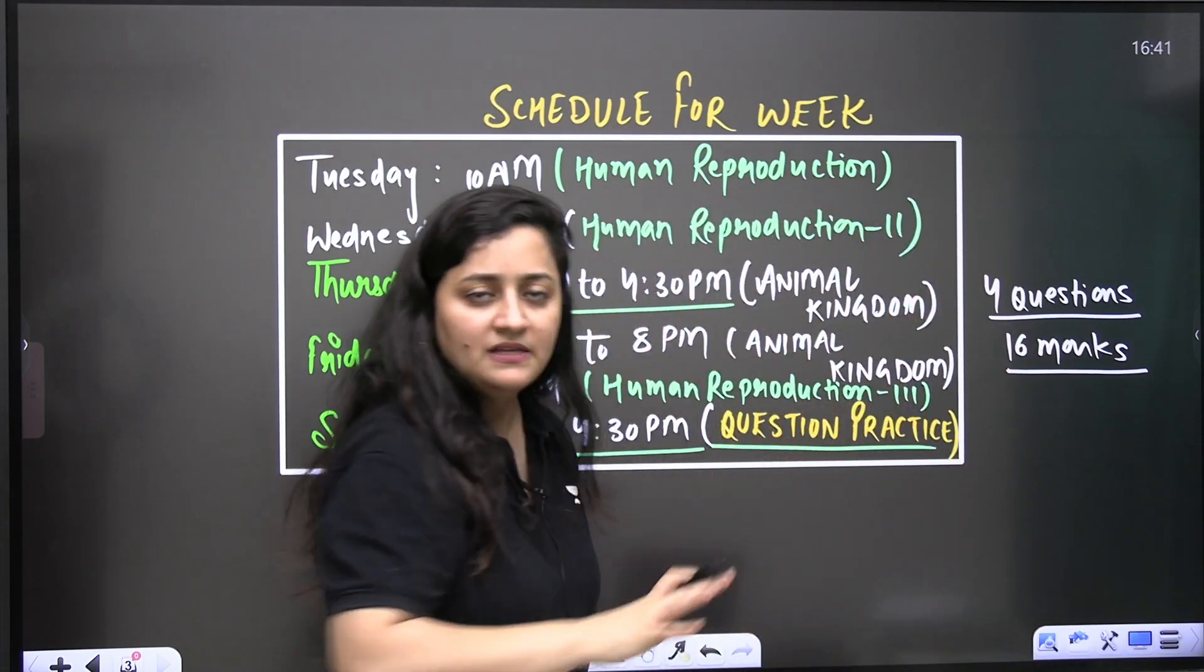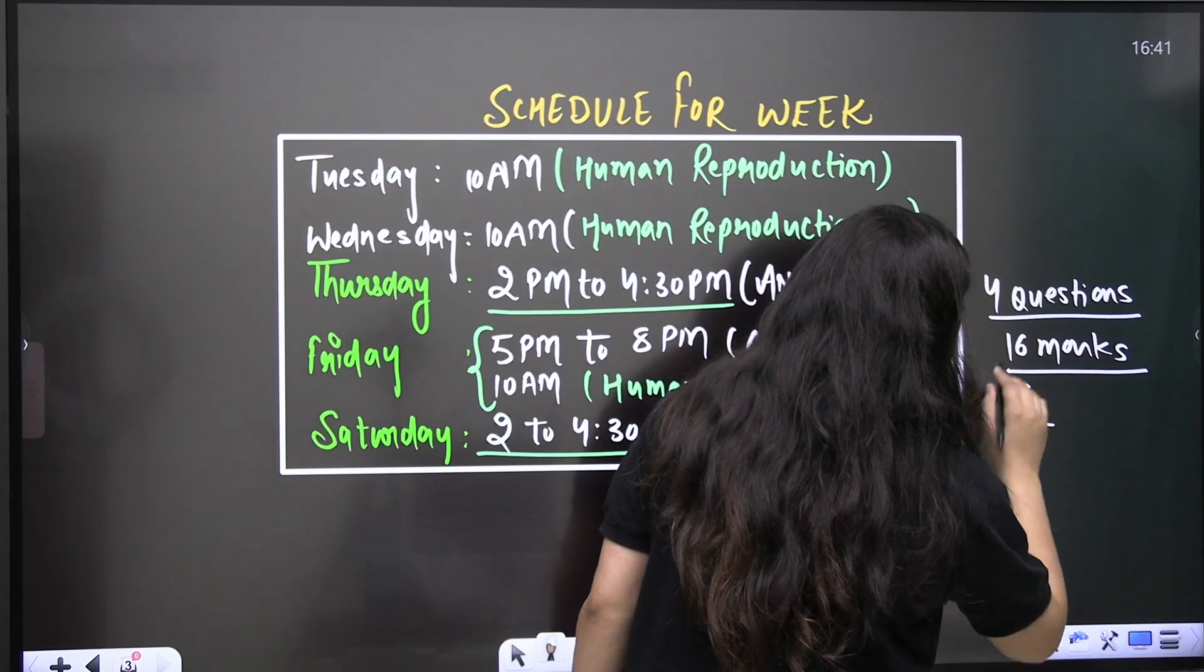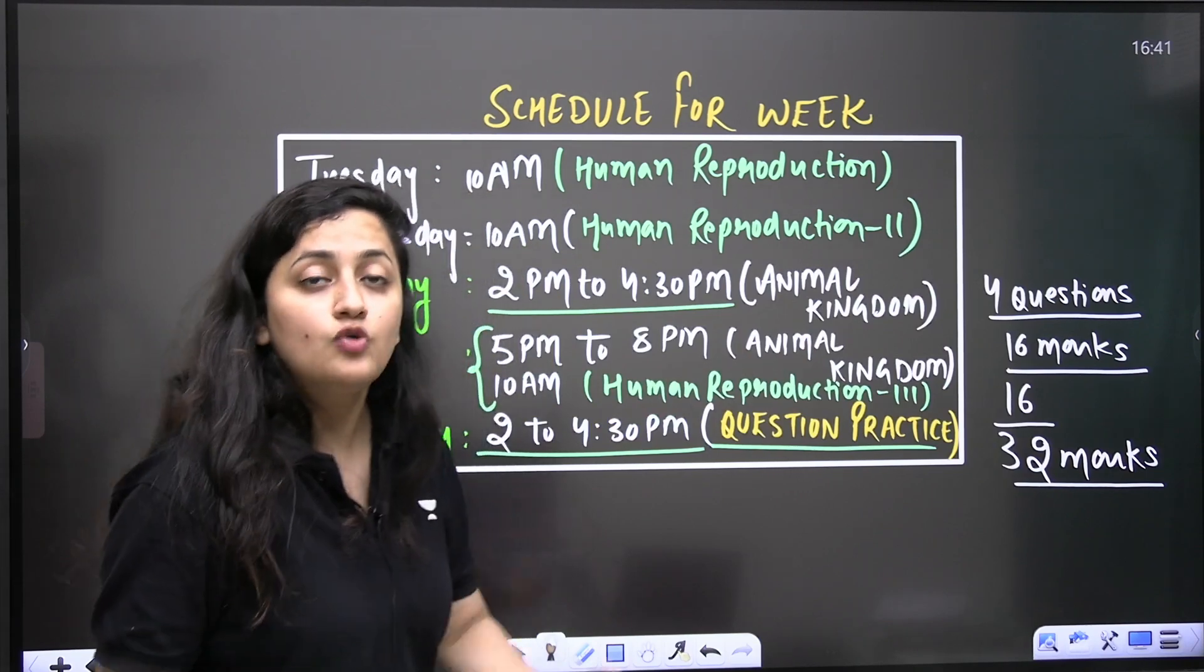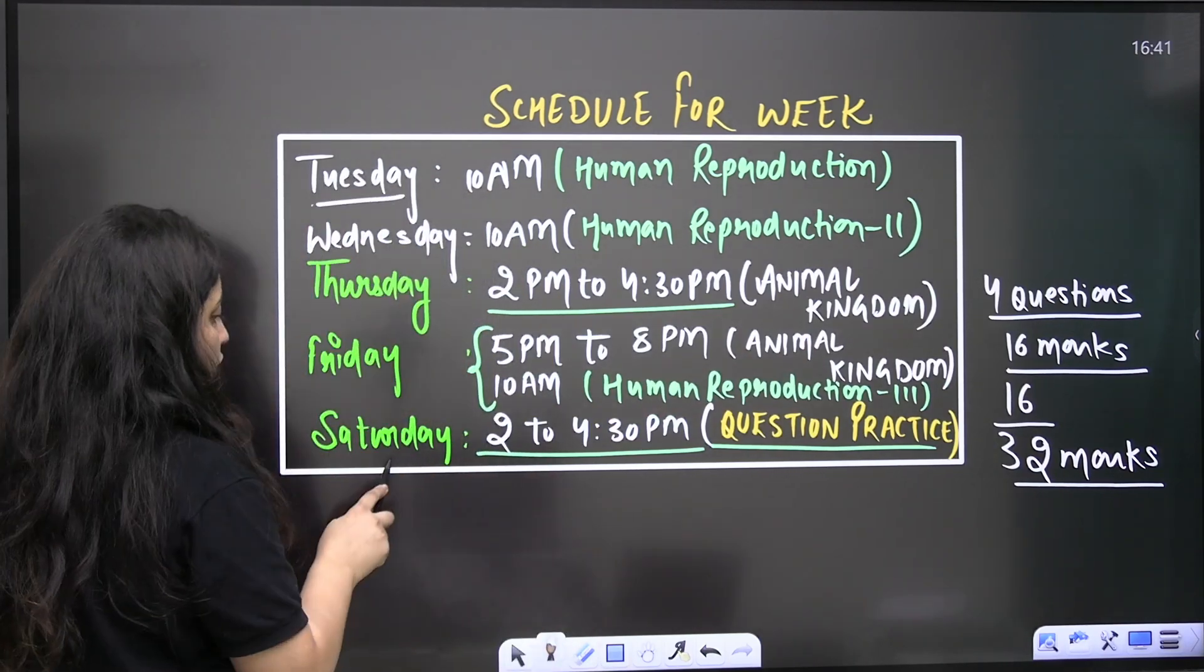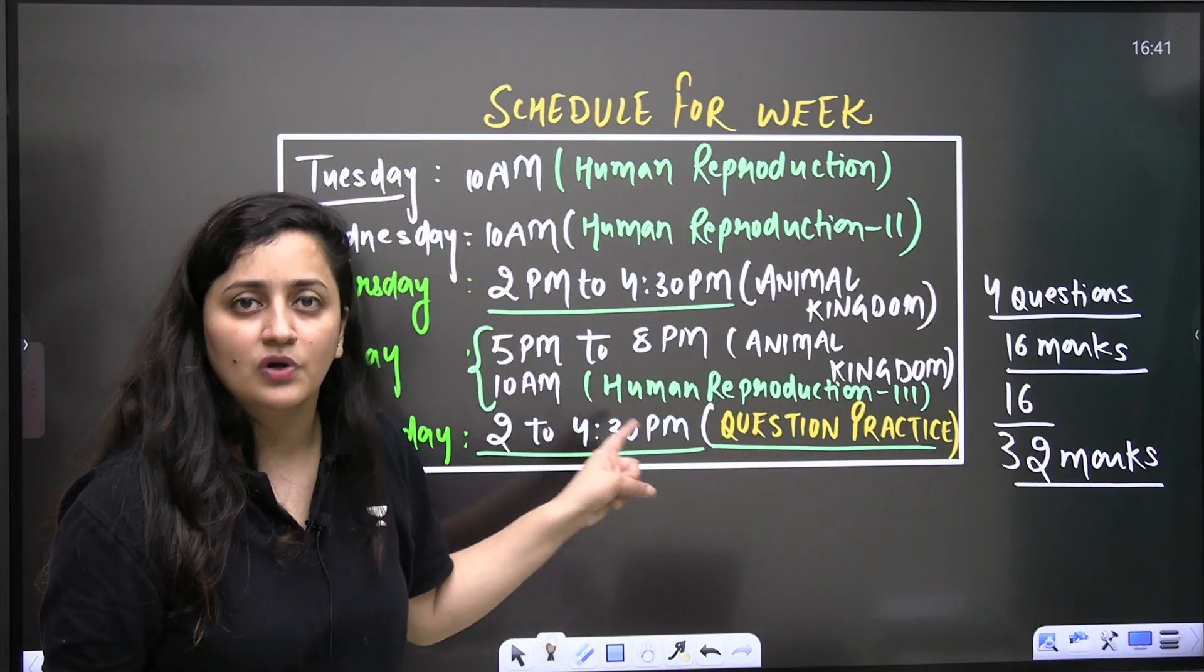Same for the human reproduction. You guys can expect minimum 16 marks. So basically, the next week of biology is for 32 marks. So I want your time from Tuesday to Saturday. And even along with the question practice, this is what we are going to achieve.